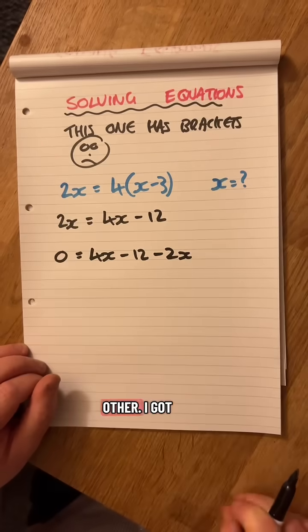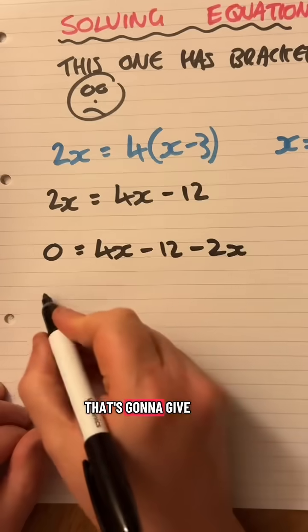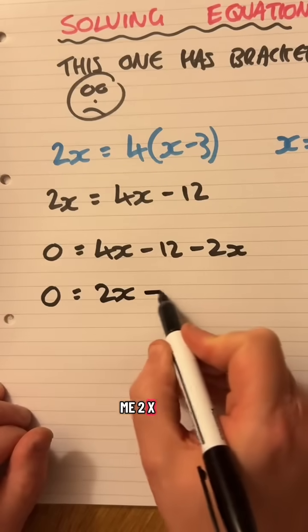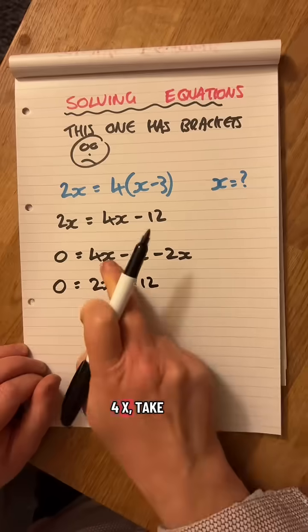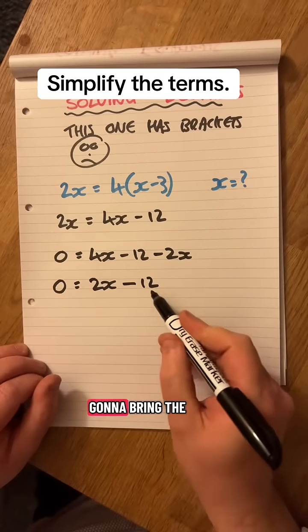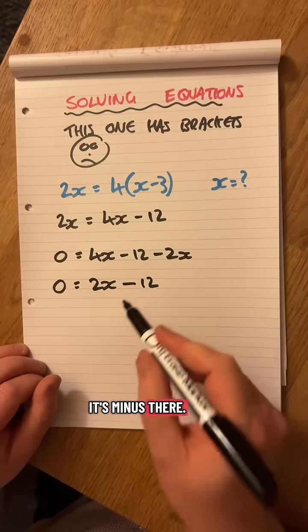I got 4x take away 2x, that's going to give me 2x minus 12. 4x take away 2x, 2x minus 12. I'm now going to bring the 12 across. It's minus there, I'm going to add it.